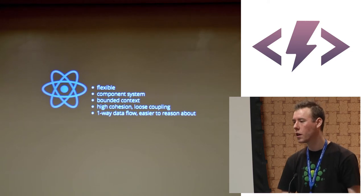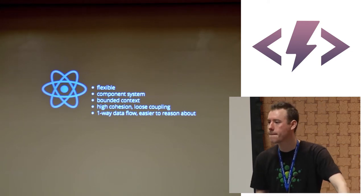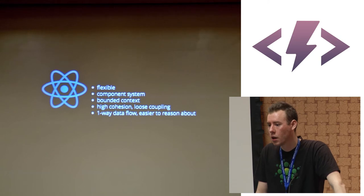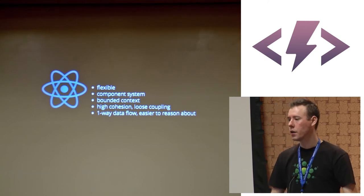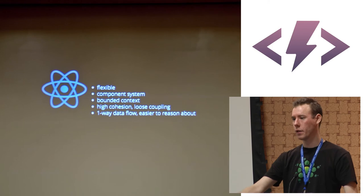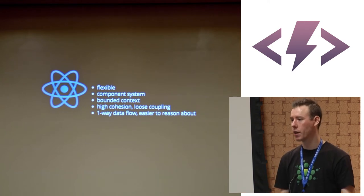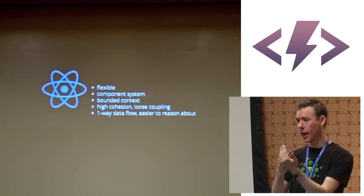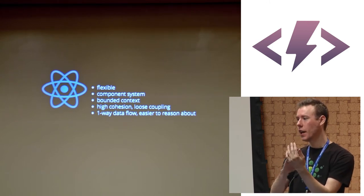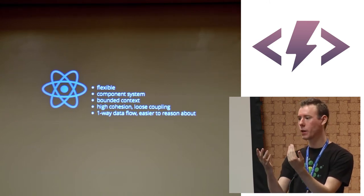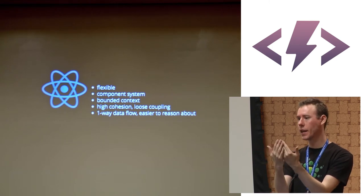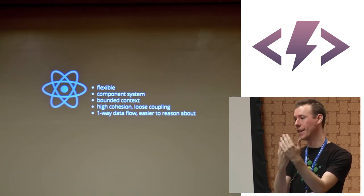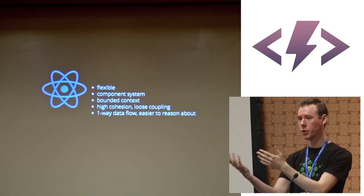Question: how related are one-way data flow and the virtual DOM? I would say the virtual DOM enables one-way data flow — it's holding virtual state, and when you trigger a re-render, it diffs against the new state you're going to be in and applies that diff to the DOM tree.